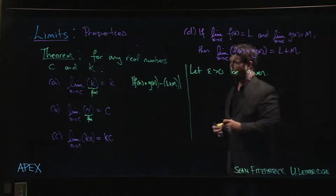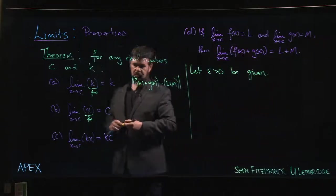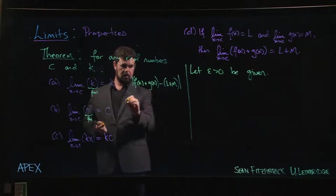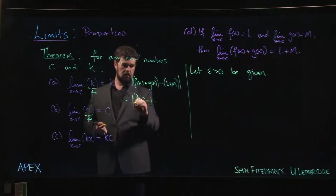So we look at this and say, how can we rearrange this? We could write this as |f(x) - L| and then |g(x) - M|.